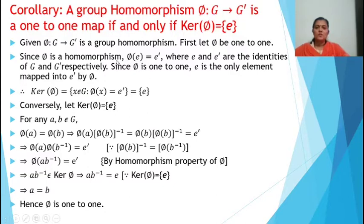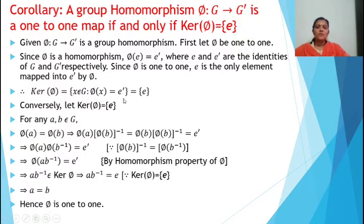Since phi is a homomorphism, by the homomorphism property we have phi(E) = E', where E and E' are the identities of G and G' respectively. Since phi is one-to-one, E is the only element mapped to E' by phi. Therefore, kernel of phi = {x ∈ G : phi(x) = E'} = {E}. Thus we have proved the first part.